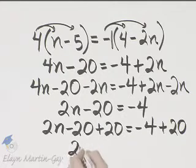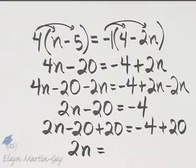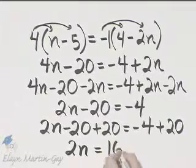On the left side, I have simply 2n then. On the right side, negative 4 plus 20, that is 16.